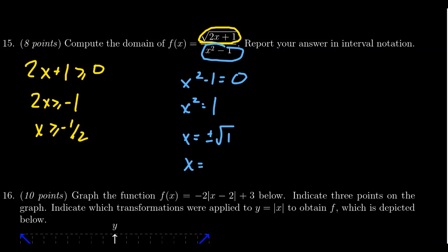And so you end up with plus or minus 1, or specifically 1 and negative 1. And these are the values that x should not be. x cannot be 1 or negative 1.